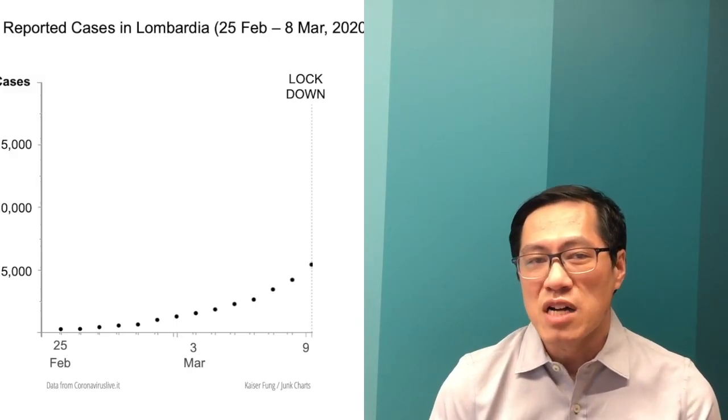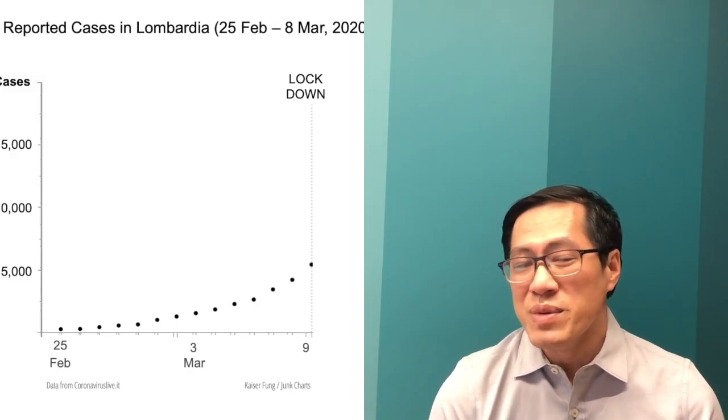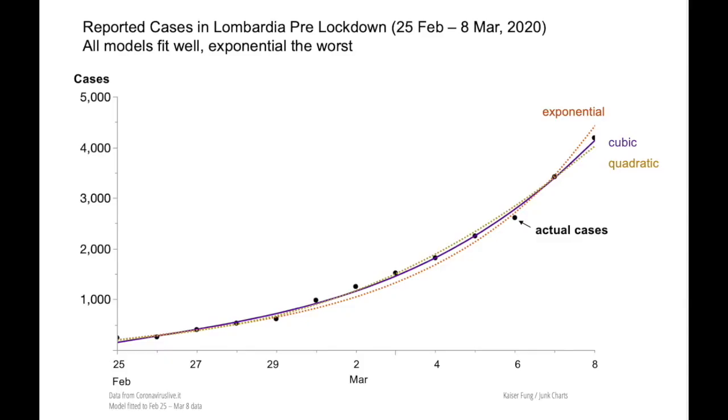Think back to the Italians when they decided to lock down the region of Lombardia on March 8th — they didn't have the entire growth curve that we see today, only the portion up to March 8th. So perhaps the media was correct on March 8th when they looked at the curve and the exponential model seemed appropriate. The way to find out is to go back to the data. Here's the chart showing data from February 25th up to March 8th, omitting the last 11 days — and you'll notice that even at that moment the quadratic or cubic curves were a better fit.